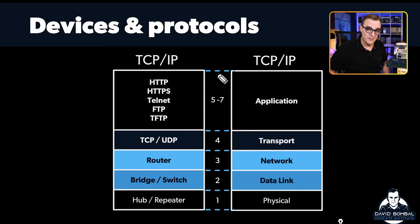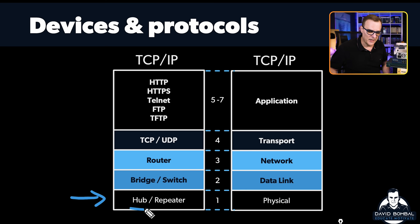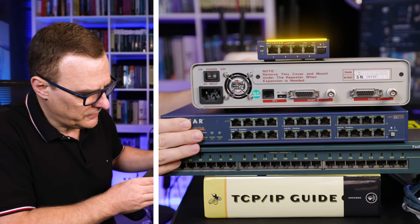This is another reason why you need to know your TCP/IP or OSI model. Engineers will often talk about where devices reside. So at layer one, as an example, we have hubs or repeaters.